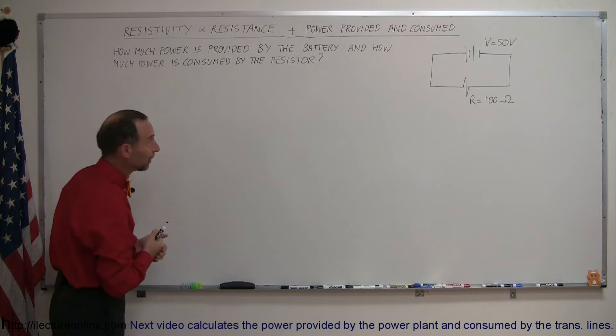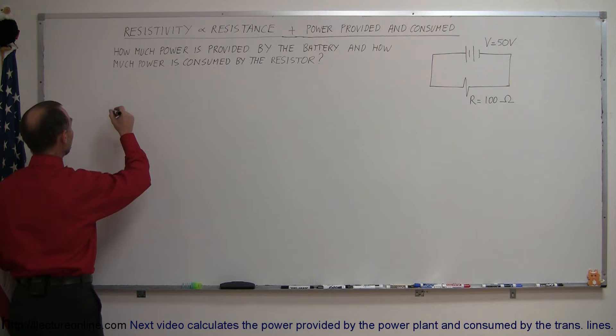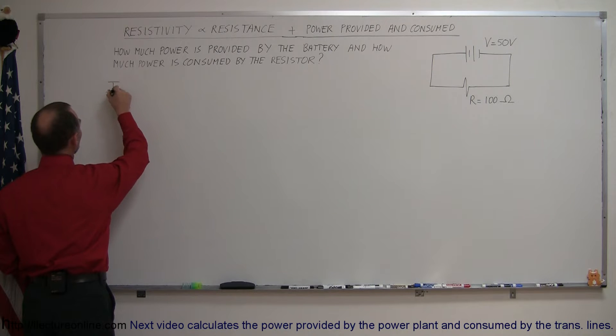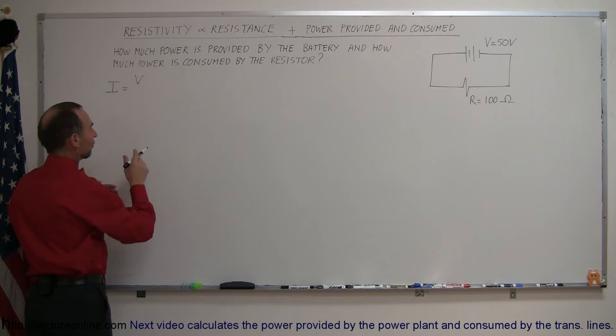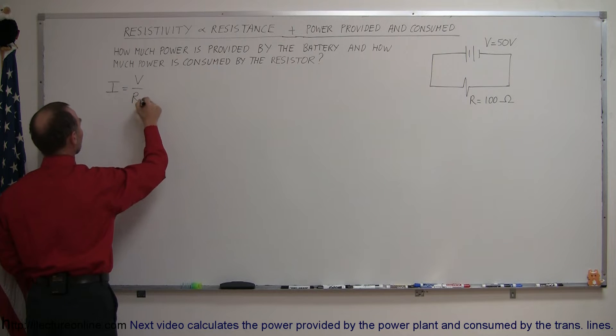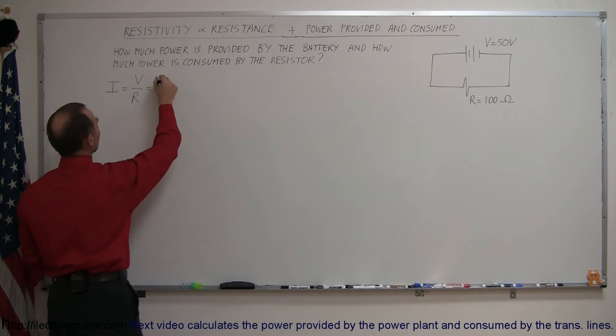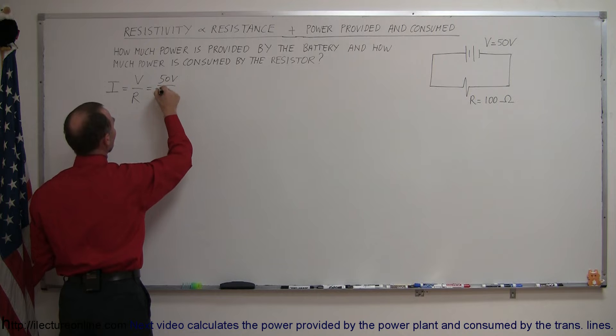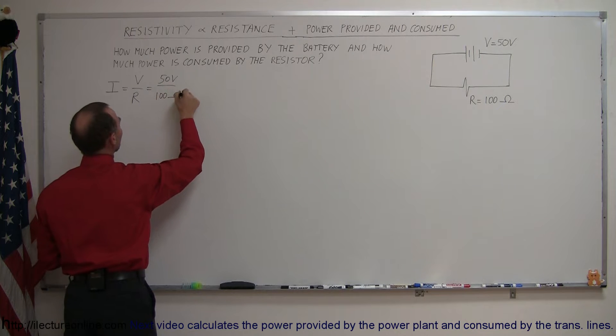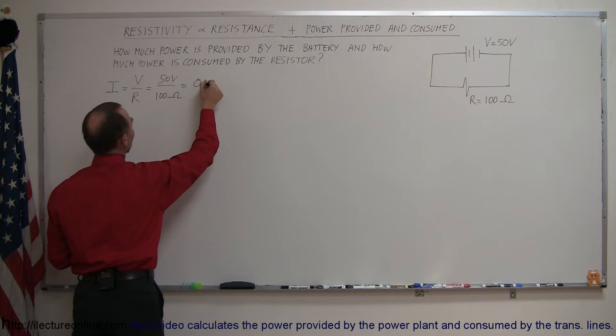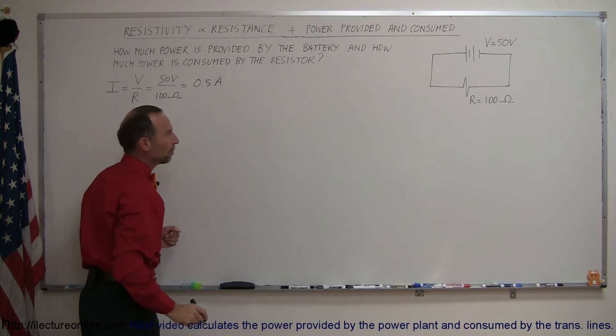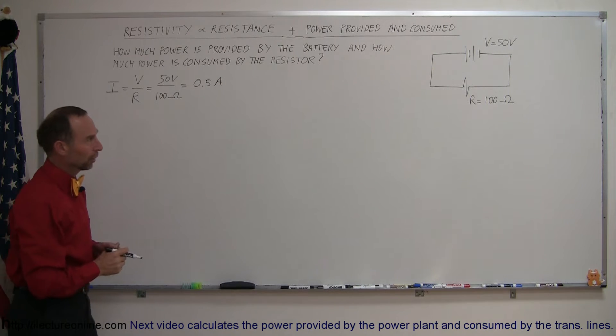So how do we do that? Let's start out by using Ohm's law. Using Ohm's law we know that the current in any circuit is equal to the voltage provided by the battery divided by the resistance in the circuit. In this case, the voltage is 50 volts, the resistance is 100 ohms, and so that would be equal to 0.5 amps. So there's a half an amp of current running through the circuit.